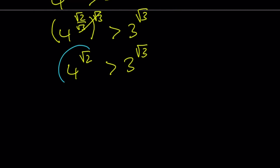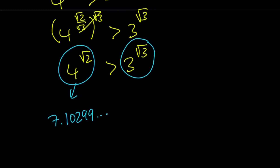4 to the power square root of 2 is approximately 7.10299..., and 3 to the power square root of 3 is approximately 6.70499.... This is kind of interesting because both numbers end in 99 after the fifth decimal digit — obviously there are infinitely more digits, but it's interesting that they share those same two digits in the same place.